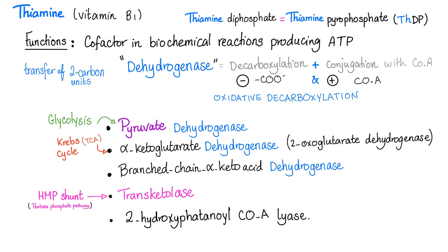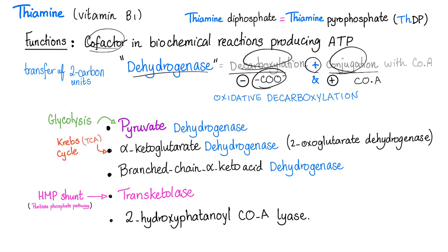Thiamine is not a co-pilot but a co-factor in biochemical reactions producing ATP, such as the dehydrogenases. Dehydrogenase reactions basically involve decarboxylation and conjugation — you remove the carboxyl group and conjugate with coenzyme A. Thiamine is a co-factor in all of these reactions.